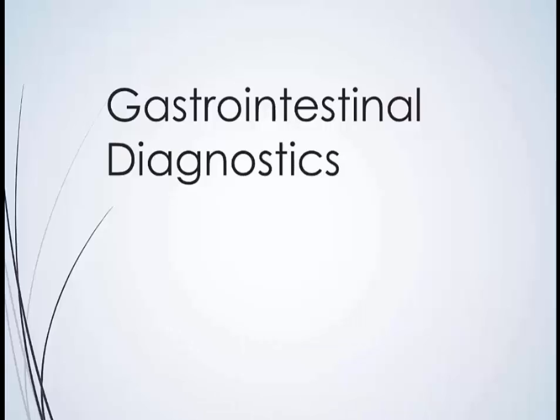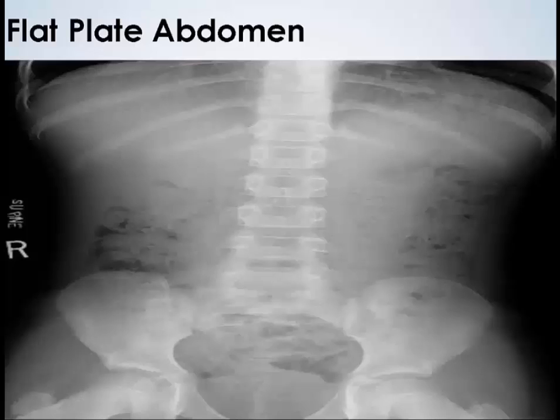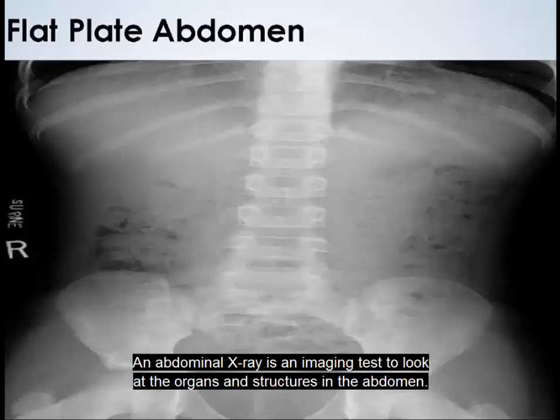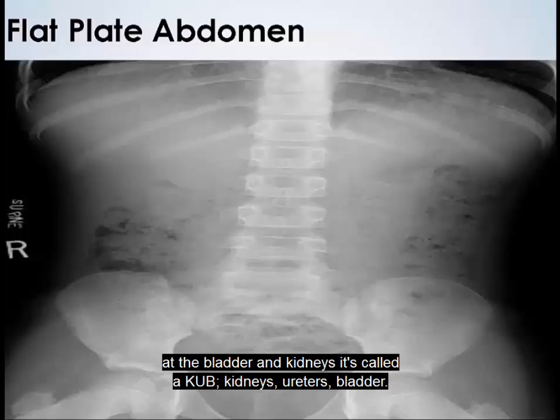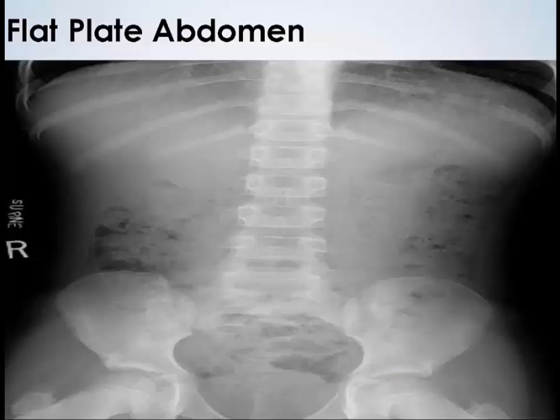Gastrointestinal diagnostics. An abdominal x-ray is an imaging test to look at the organs and structures in the abdomen. This would include the spleen, the stomach, and intestines. When the test is done to look at the bladder and kidneys, it's called a KUB — kidneys, ureters, bladder.